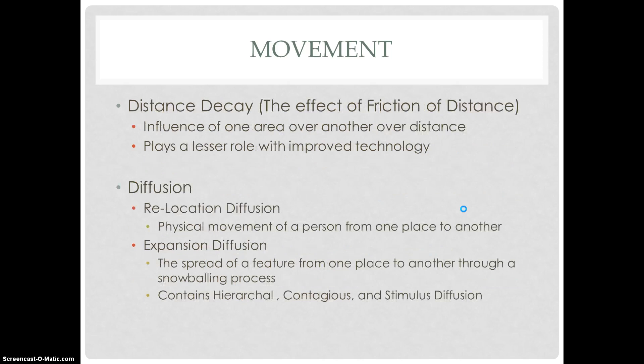Another main topic in movement is distance decay, which is essentially the effect of friction of distance. Distance decay refers to the diminishing influence one area has over another as distance increases, and just like friction of distance, it plays a lesser role with improved technology. Another big concept within movement is diffusion, and there are two types: relocation diffusion and expansion diffusion. Relocation diffusion is the physical movement of a person from one place to another.